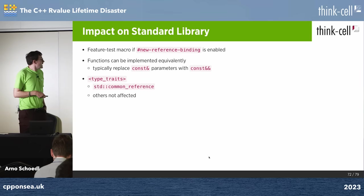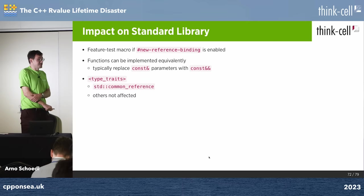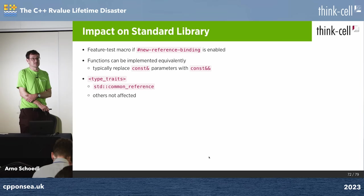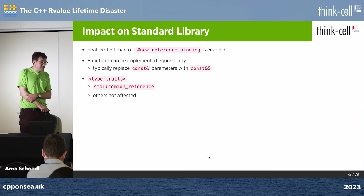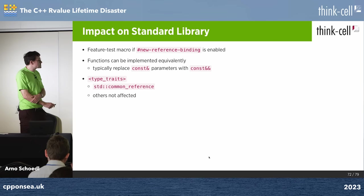What's the impact on the standard library? It's not so bad. You can use a feature test macro. Many functions take things by const ref — those would just become const R-value references, adding another ampersand, but inside the function body an R-value is an L-value anyway, so it makes no functional difference. The only type trait I found that would be affected is common_reference.